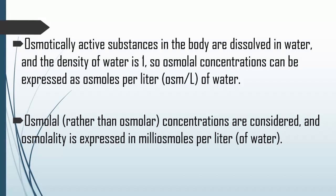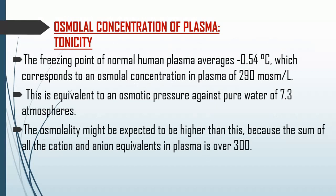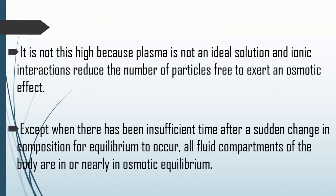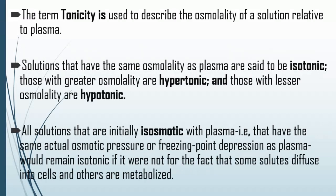The osmolarity of plasma is approximately 290 milli-osmoles per liter, close to 300 milli-osmoles per liter. The particles that largely contribute to plasma osmolarity are sodium and chloride. Tonicity describes the osmolarity of a solution relative to that of plasma (approximately 300 mOsm/L). A solution can be hypotonic, isotonic, or hypertonic. A hypotonic solution has lower osmolarity than plasma — fewer dissolved solutes — so if you place a cell in a hypotonic solution, water moves into the cell, causing it to swell.